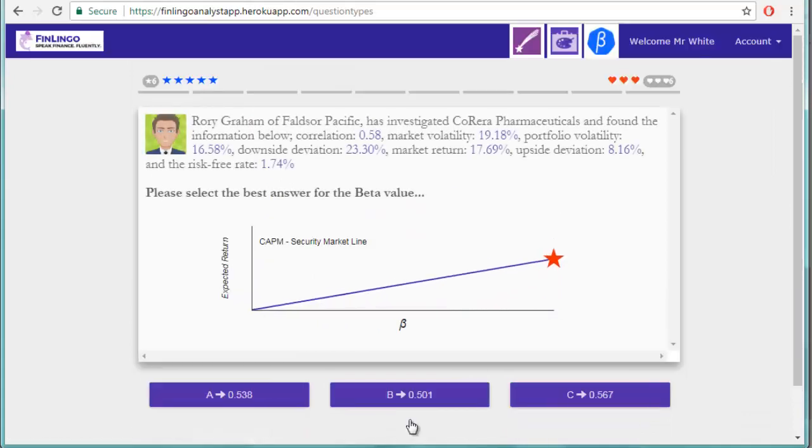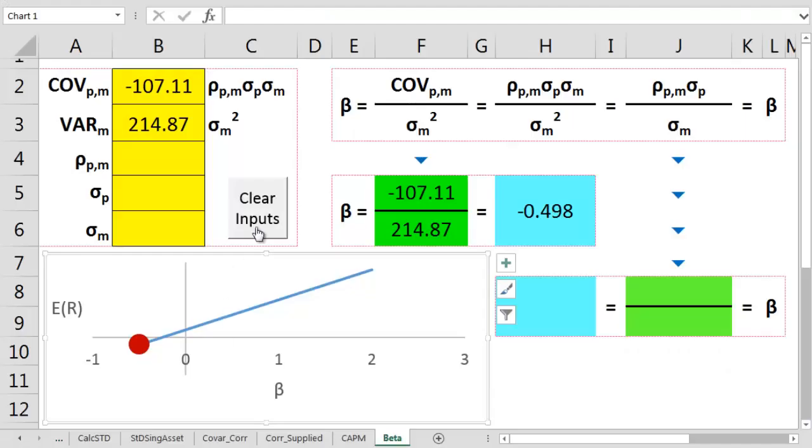So now we can try the second question type. This time we've got the correlation and the two related standard deviations. Let me note them down again, then I'll transfer them over to my amazing spreadsheet.